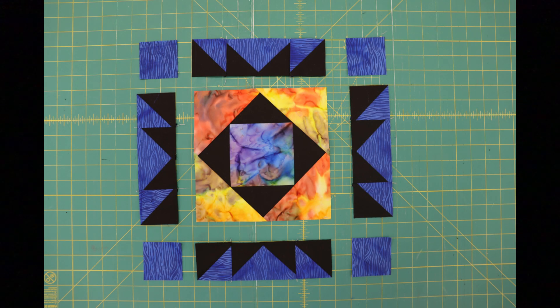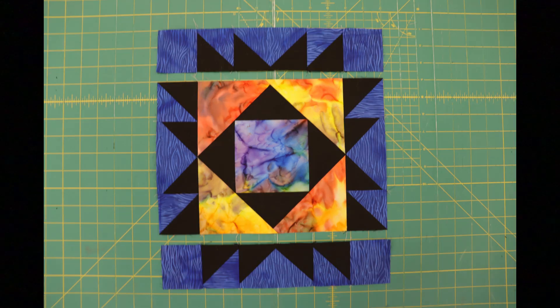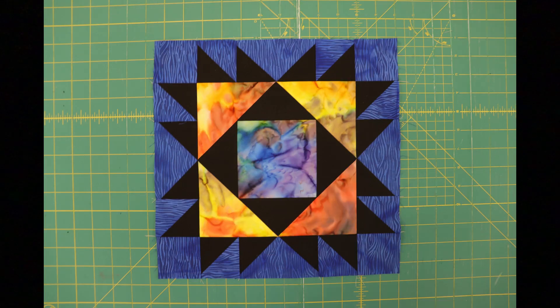From there we just have to nine-patch everything together. So we have our center square in a square in a square that we made, the four strips that we just made, and then in the very corners we're going to add the four two and a half inch accent squares. And we're going to sew those rows together, then we sew those columns together, and we are left with our Union Square block.